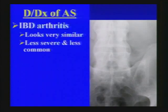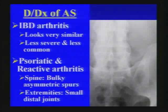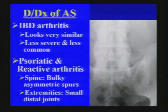In the differential diagnosis of AS: IBD arthritis can look very similar but is less severe and less common. Psoriatic and reactive arthritis look a bit different — in the spine they produce bulky, asymmetric spurs rather than delicate symmetric syndesmophytes, and they typically affect the extremities at small distal joints like the IP joints, rather than the large central joints like the hip and shoulder, which AS typically involves.